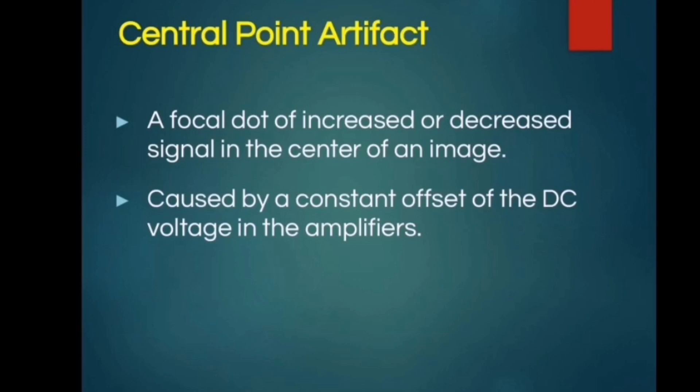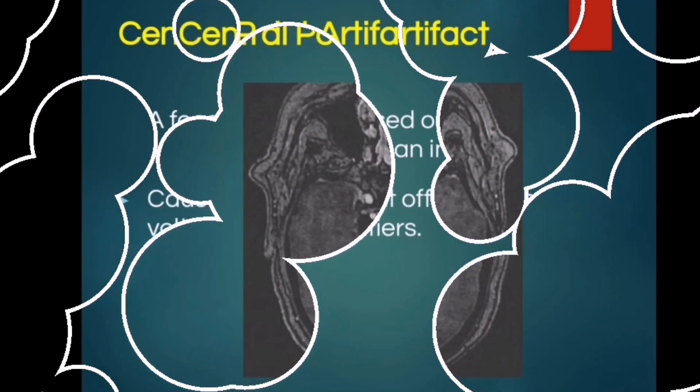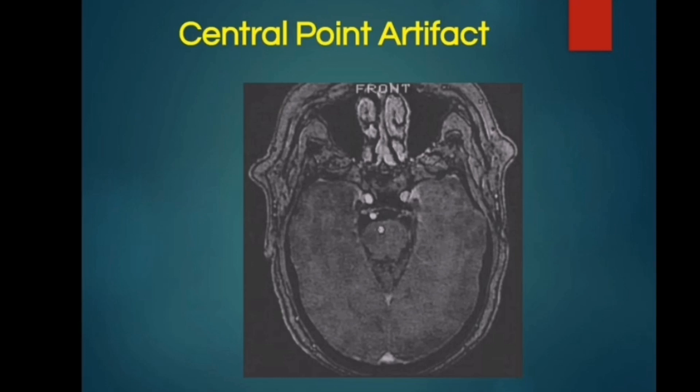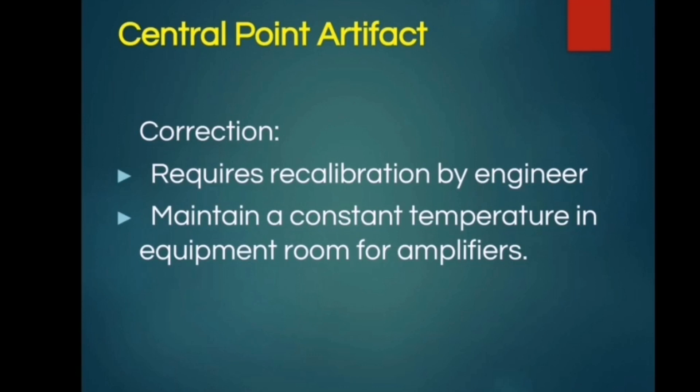A central point artifact is a focal dot of increased or decreased signal in the center of an image. It may be caused by a constant offset of DC voltage in the amplifiers. It requires recalibration by an engineer and maintaining a constant temperature in the room for the amplifiers.